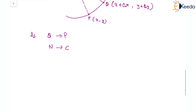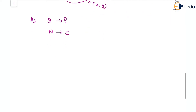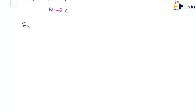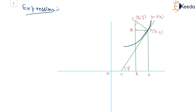Now let us understand the expression for the center of curvature. Let's say we have a curve y = f(x), and at some point P with coordinates x, y, we draw a tangent to this curve which has a certain slope — the angle is ψ with the positive x-axis, so tan ψ is the slope. Drawing the normal from P, we get the center of curvature C with coordinate x-bar, y-bar. The distance CP equals rho, the radius of curvature.